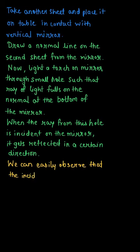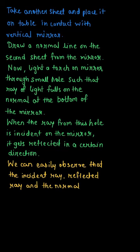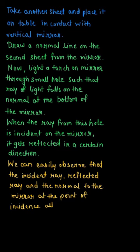We can easily observe that the incident ray from the small hole, the reflected ray, and the normal of the mirror at the point of incidence all lie in the same plane, on the same white piece of paper that we kept normal to the mirror.